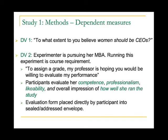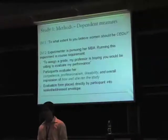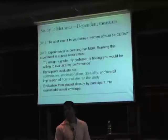Our next dependent variable is really very interesting. When the experiment ends, the experimenter — a woman who looks about college age — tells the participant that she herself is actually an MBA student, and part of her course credit is based on how she runs this experiment. So participants evaluate how competent she is, how well she runs the study, and how professional she is.